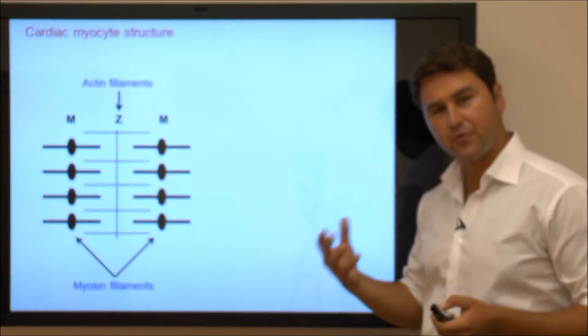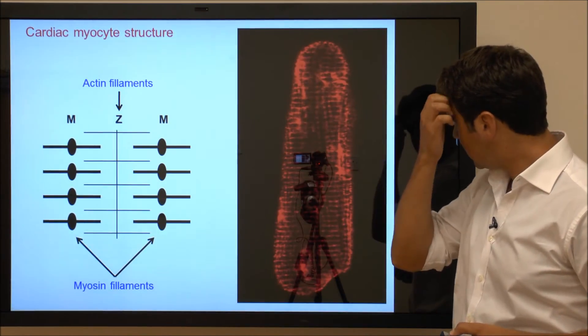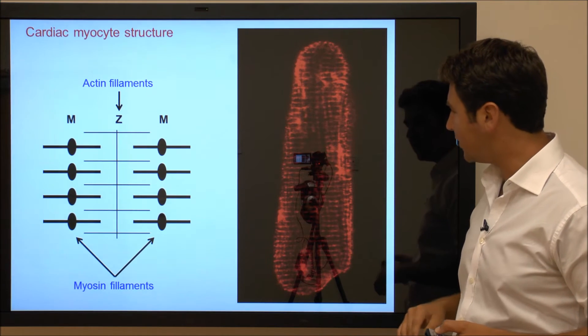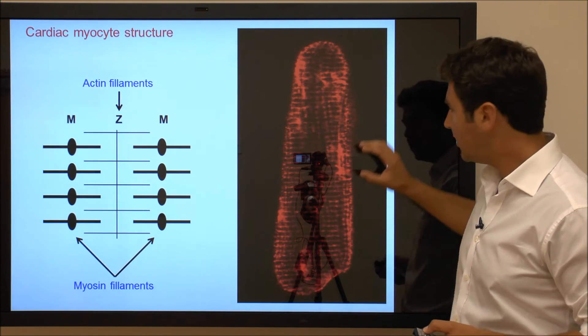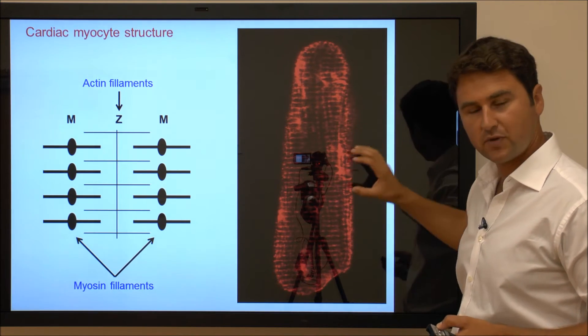If we look at the membranes, or the membranous structures, this is an immunofluorescent image of a cardiac myocyte whose membranes have been stained with a fluorescent dye.